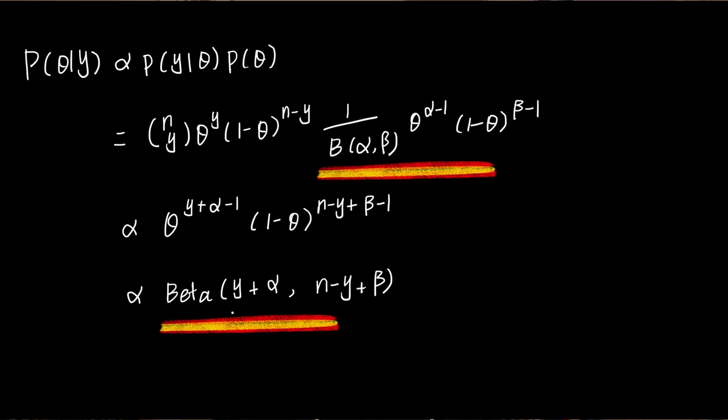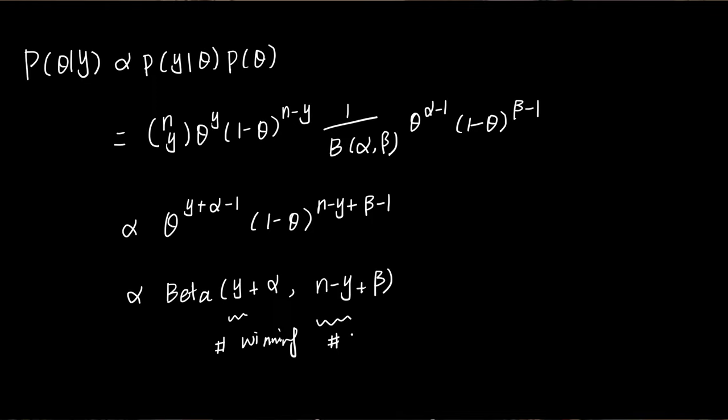Here in the equation, y is the number of successes and n minus y is the number of losses, which means that for each arm at each time step, if we get a reward, we add 1 to the first parameter, and if we fail, we add 1 to the second parameter.